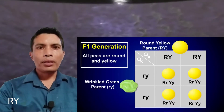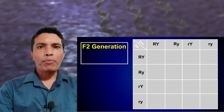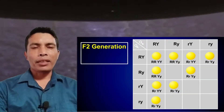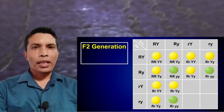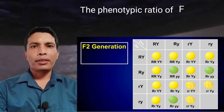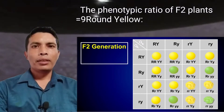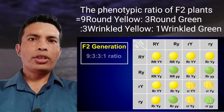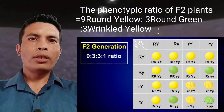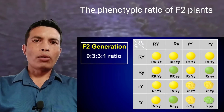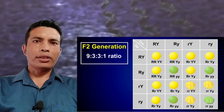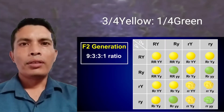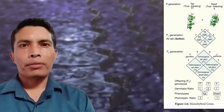When the F1 plant is self-hybridized, we can observe that 3/4 of F2 plants have yellow seeds and 1/4 have green seeds. The yellow and green color are segregated in a 3:1 ratio. Round and wrinkled seeds are also segregated in a 3:1 ratio, just like in a monohybrid cross.